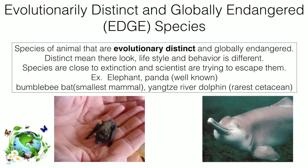There is another category known as EDGE species, or Evolutionarily Distinct and Globally Endangered species. These are species of animals that are evolutionarily distinct and also globally endangered, meaning they are very close to extinction. Examples include the elephant, panda, and the smallest mammal, the bumblebee bat.